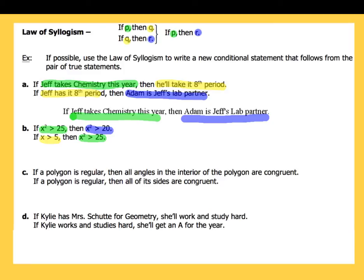When we highlight everything we can really see and come up with our conclusion very simply. Our conclusion for this one: we can use the law of syllogism. We could say if x is greater than 5, then x² is greater than 20. That would be the conclusion for example B.